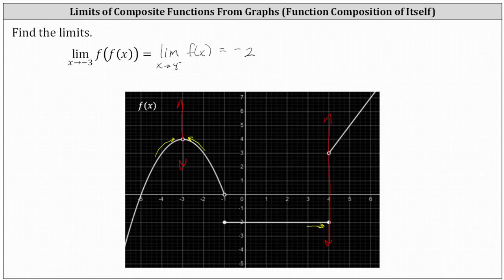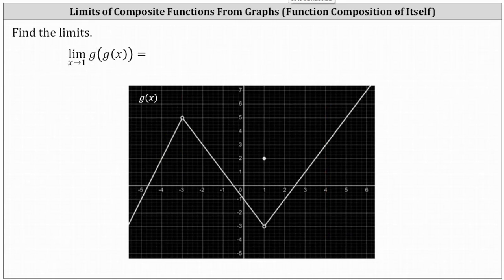Let's look at a second example. Here we have the limit as x approaches one of g of g of x. Once again, we begin by determining the limit as x approaches one of the inner function g of x. Here's x equals one. We're approaching from both directions, meaning from the left and from the right. Notice we are approaching the y value or function value of negative three.